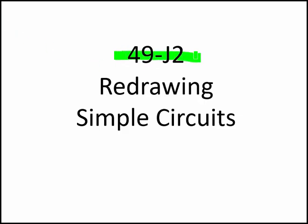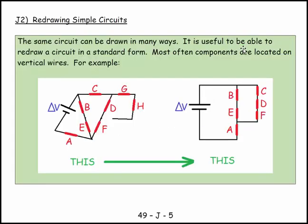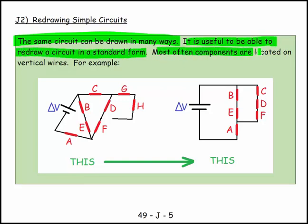Welcome, this is 49-J2, and this is a section on redrawing simple circuits. This is going to be conceptual in nature, but I think it's quite important. The same circuit can be drawn in many ways. It's useful to be able to redraw a circuit in a standard form. Most often, components are located on vertical wires.